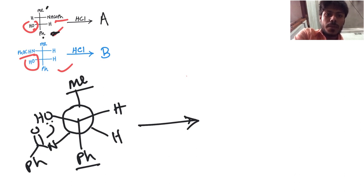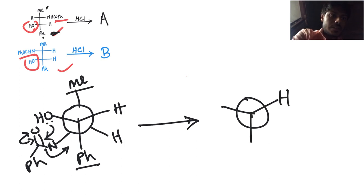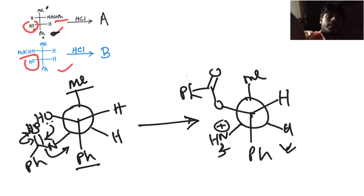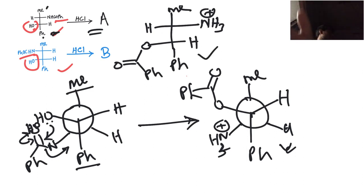In this gauche arrangement of the threo isomer, the oxygen lone pair can easily attack over here. The intermediate opens and you get the product with O-CO-Ph, methyl, hydrogen, and NH. Protonation then gives NH3+. So product A is: Ph, Me, Ph — with NH3+, H, O-CO-Ph, and H.